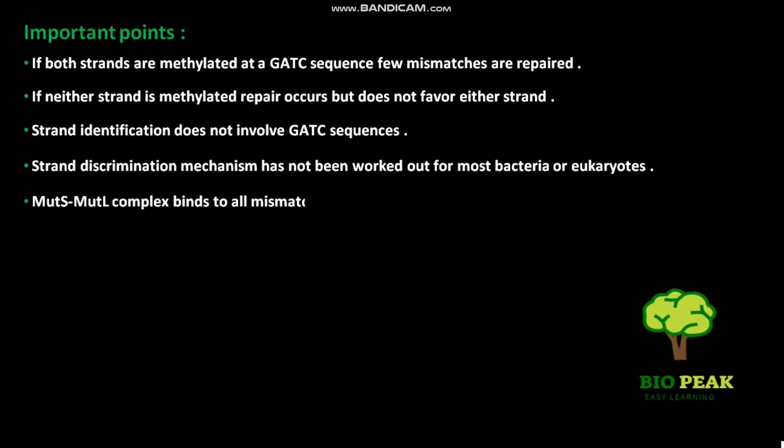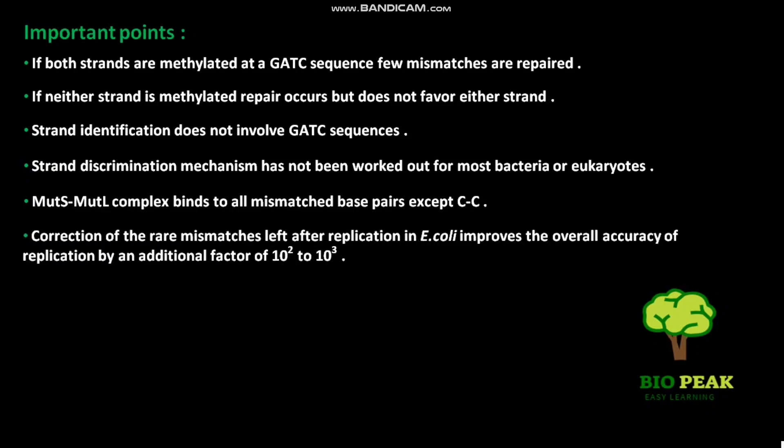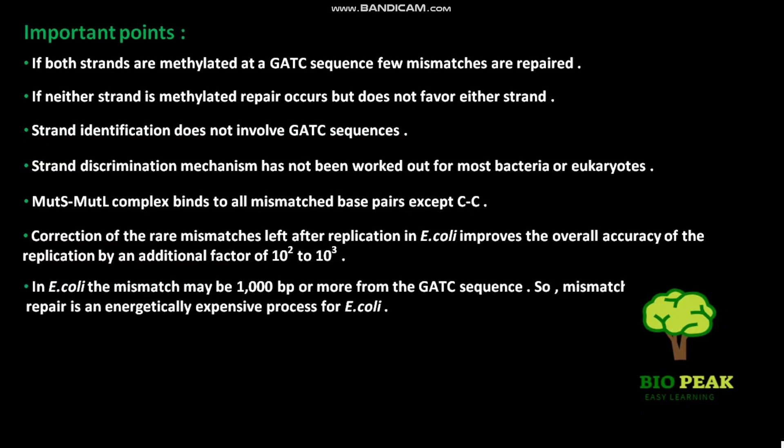MutS-MutL complex binds to all mismatched base pairs except cytosine-cytosine. Correction of the rare mismatches left after replication in E. coli improves the overall accuracy of the replication by an additional factor of 10 to the power 2 to 10 to the power 3. In E. coli, the mismatch may be 1000 base pairs or more from the GATC sequence.